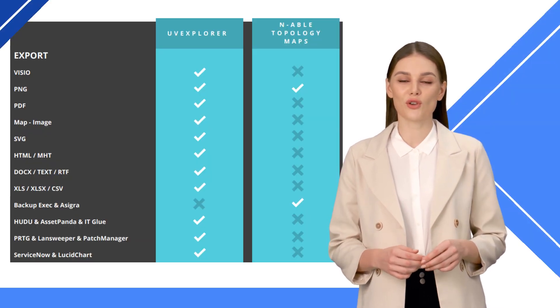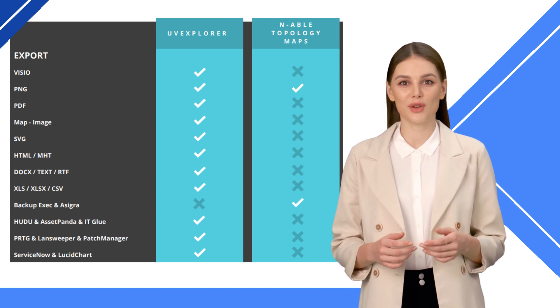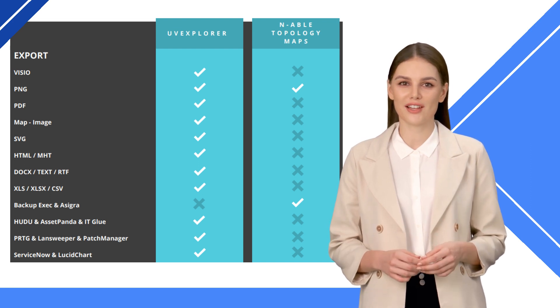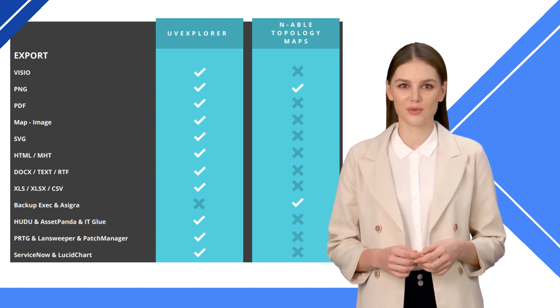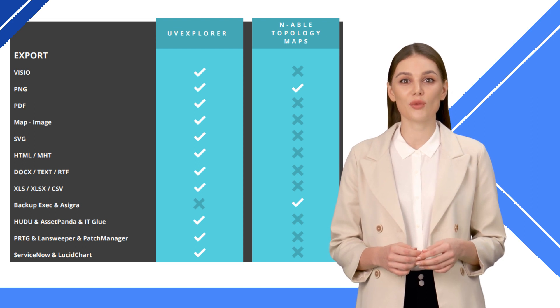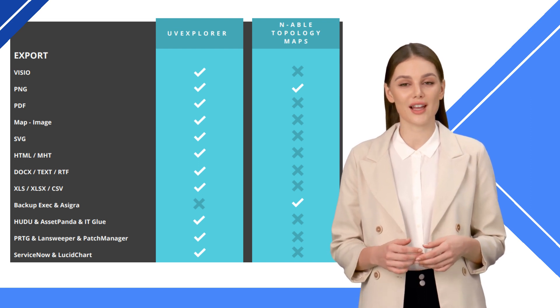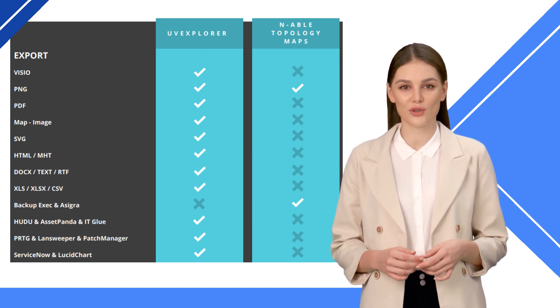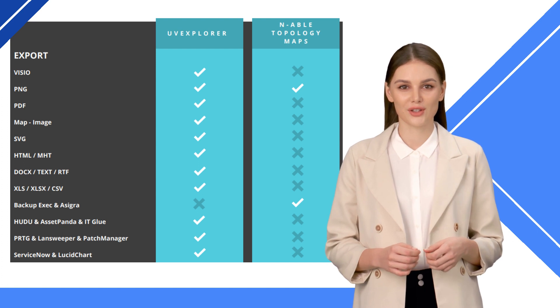The biggest difference between the two products is N-ABLE topology maps is cloud-based and UV Explorer is on-premise. Both tools export in the PNG format, and N-ABLE integrates directly with the N-Central Console, Backup Exec, and Asigra.